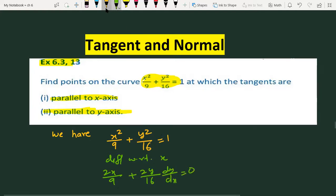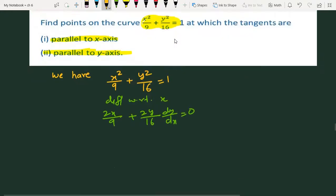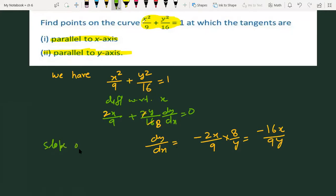Differentiate with respect to x. We have x²/4 + y²/16 = 1, so 2x/4 + 2y/16 · dy/dx = 0. The slope of tangent dy/dx = -16x/9y.